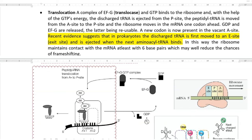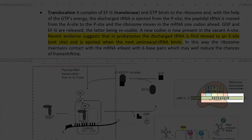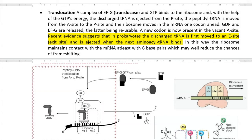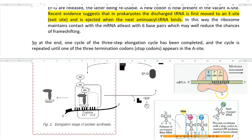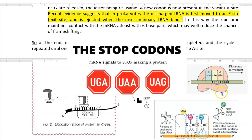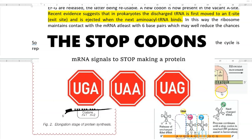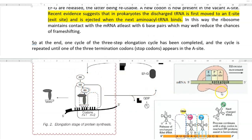This facilitates the binding of the next aminoacyl tRNA molecule. In this way, the ribosome maintains very tight contact with the mRNA molecule with the help of at least 6 different base pair interactions. This tight contact ensures there will not be any chances of frameshifting during the process of elongation. At the end, one cycle of the three-step elongation cycle has been completed, and this cycle is further repeated until one of the three termination codons appears at the A site.